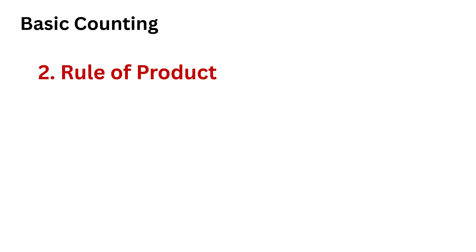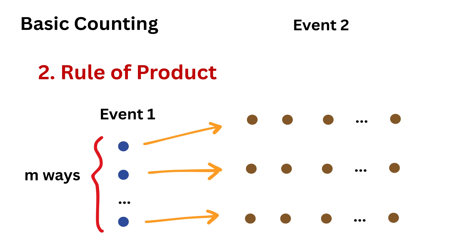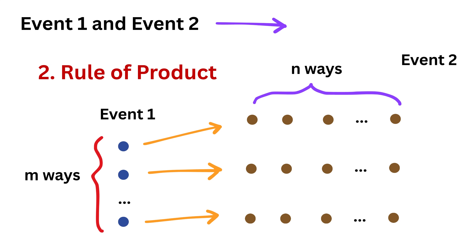The second is the rule of product. It says that if one event can happen in m ways, and for each of those ways another event can happen in n ways — meaning each of these m events can happen in n ways — then the two events together can occur in m multiplied by n ways.